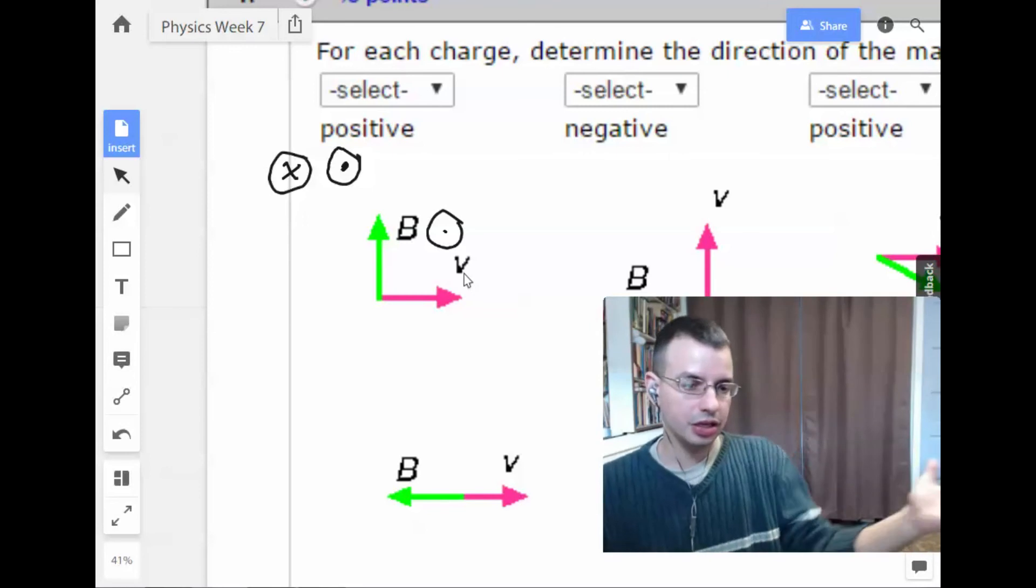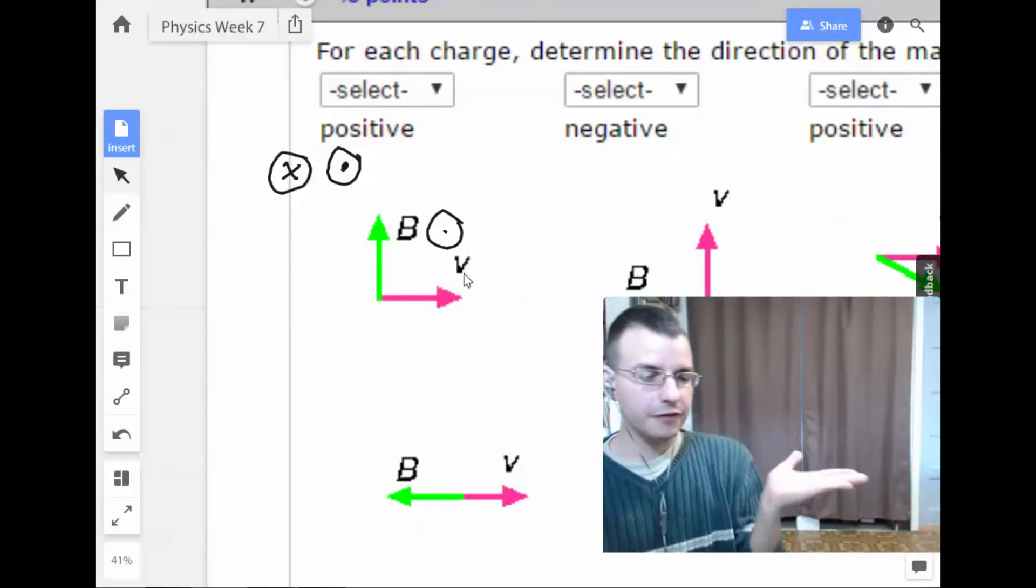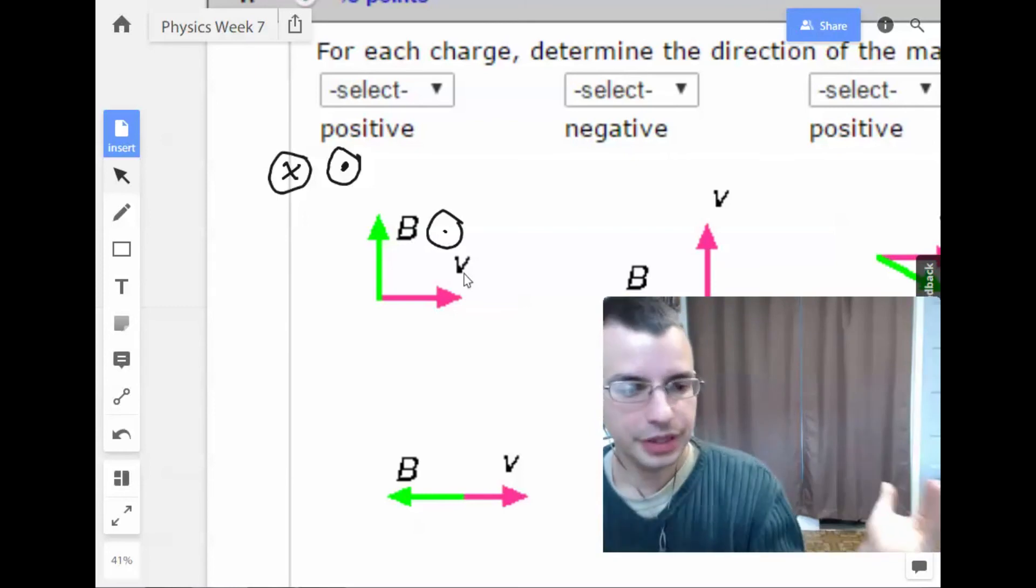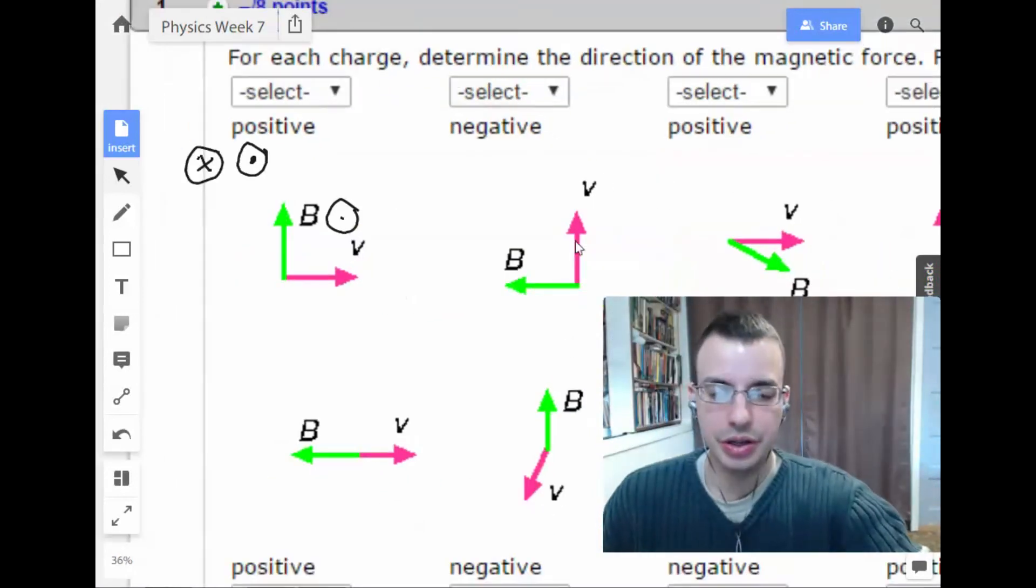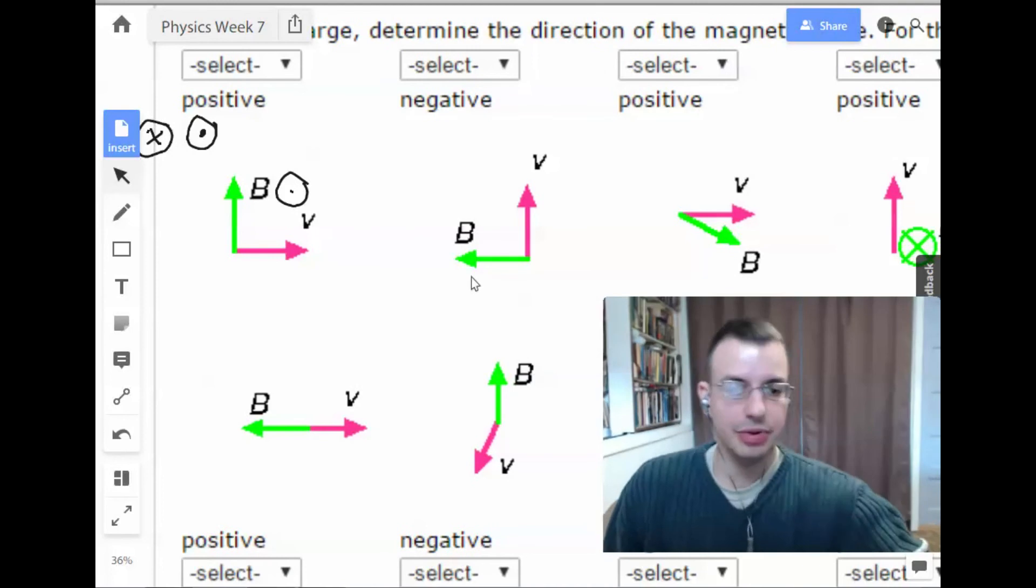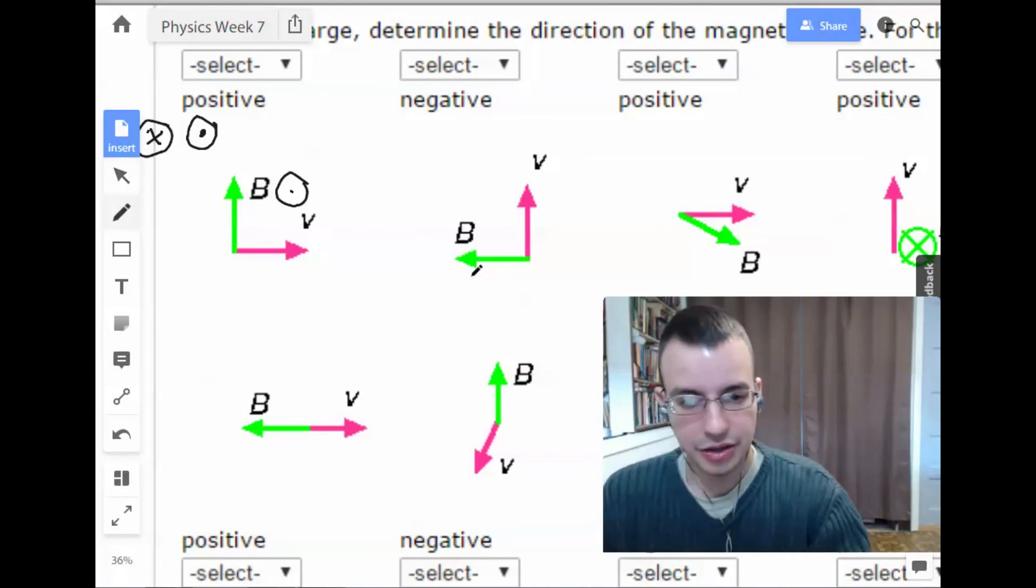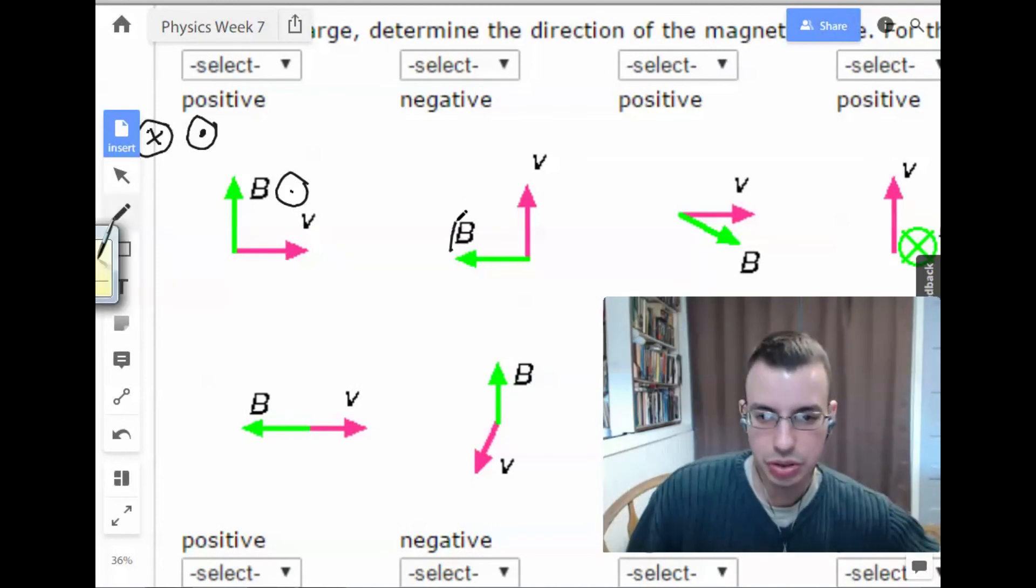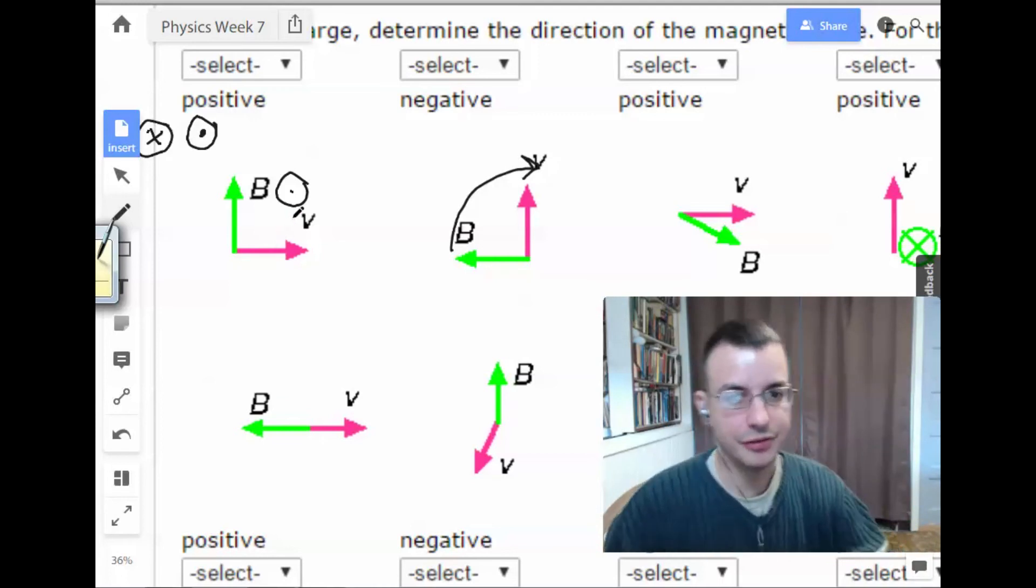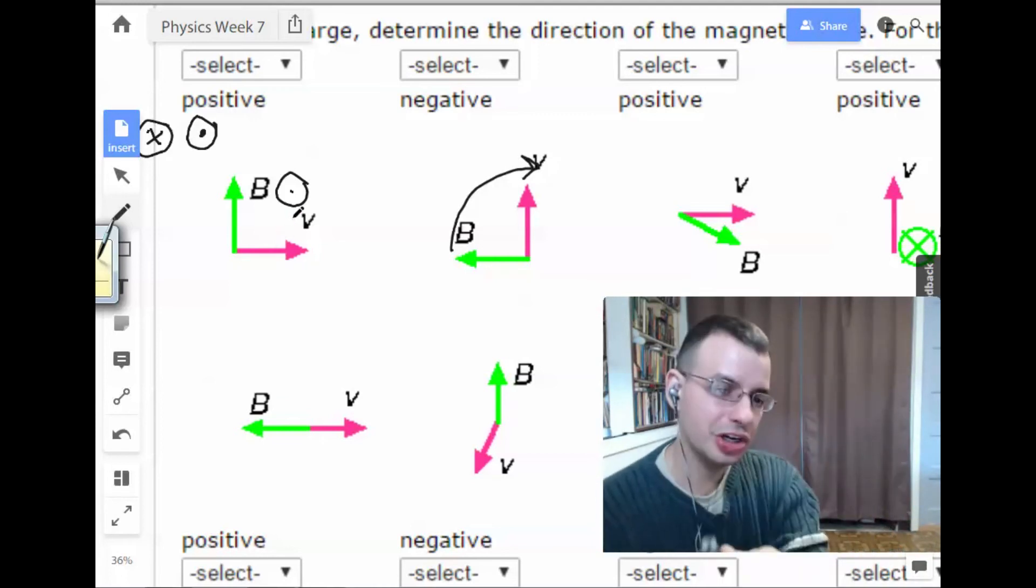For this guy, we have V cross B going in that way. Going on to the next one. This guy, if you look at it, it's exactly the same. We took this and rotated the whole thing 90 degrees. We get the exact same thing we have for the first one. But it's a trick because the charge is negative.